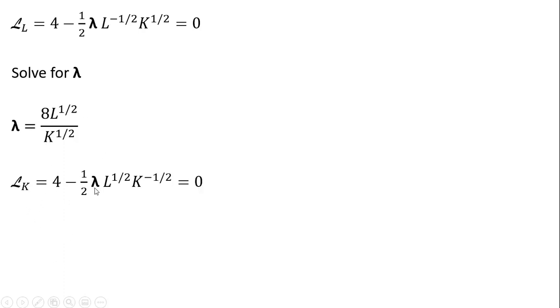And then from the second partial derivative result, I will also solve that for lambda. So moving some things around, we get the following. We're going to set lambda equal to lambda. So setting these two equations equal to one another and just simplifying, I'm just going to get L equals K.